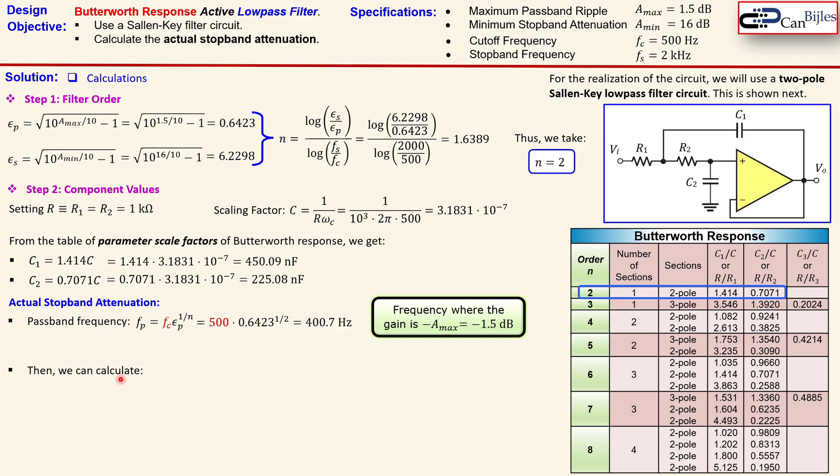Now we can calculate now the actual stopband attenuation that is then done by this formula. You see here the epsilon_p again, the stopband frequency, the passband frequency just calculated and again the order. Now what do we get? We get now the following. We just substitute here the values. We get now here 24.1 dB. In the minimum we need to have 16 dB. So this is way above that value. So this is indeed sufficient.